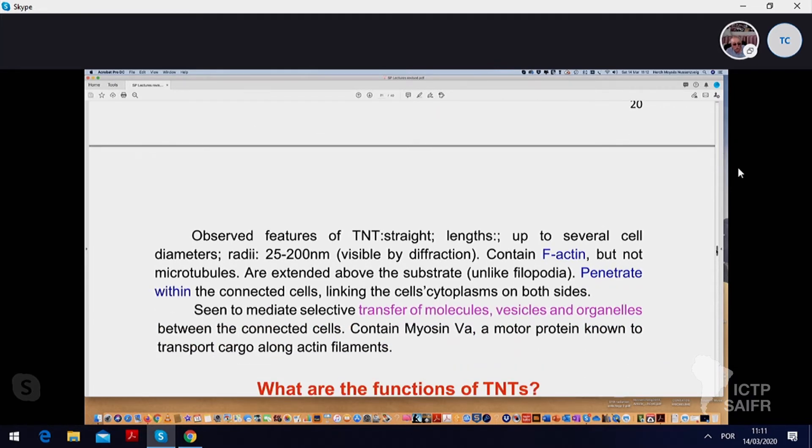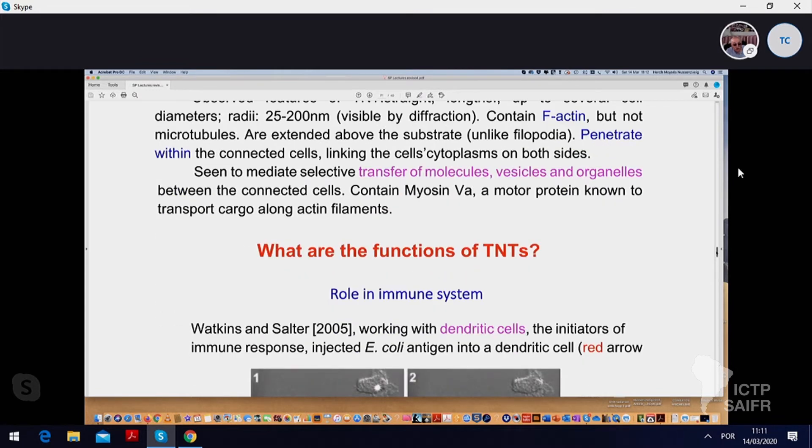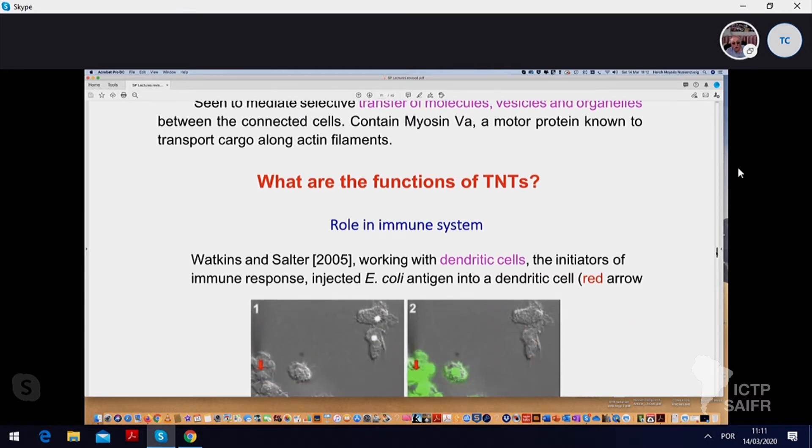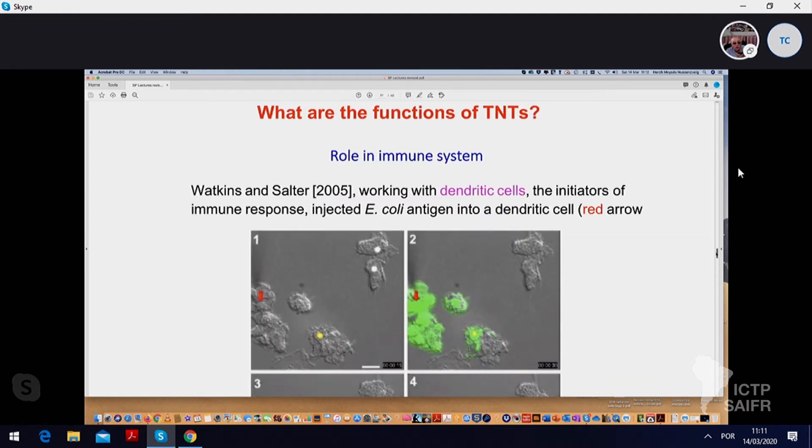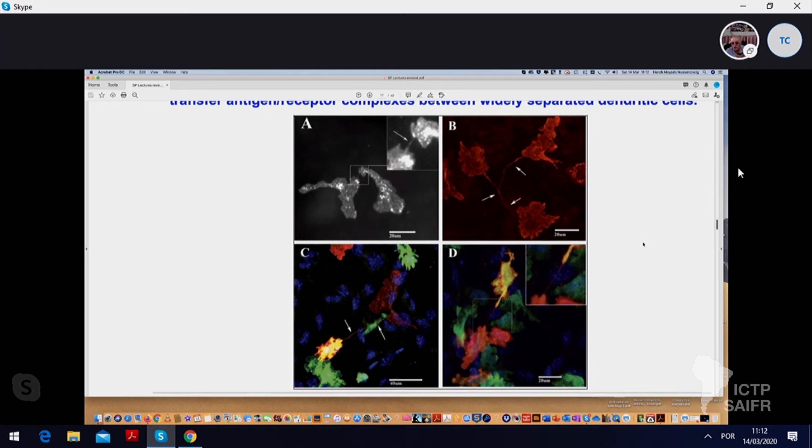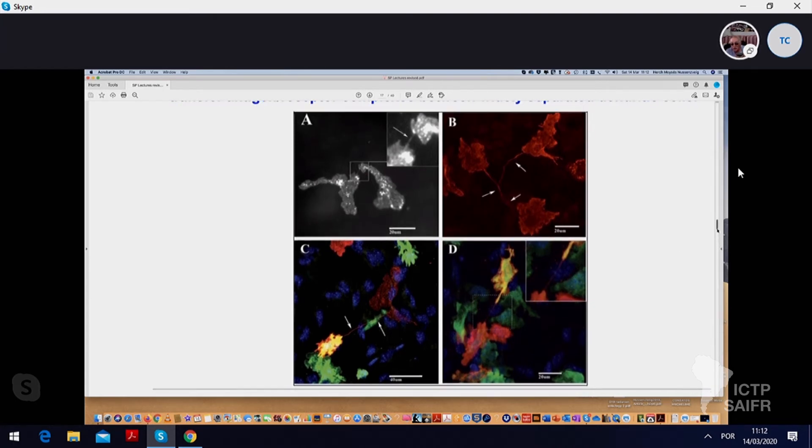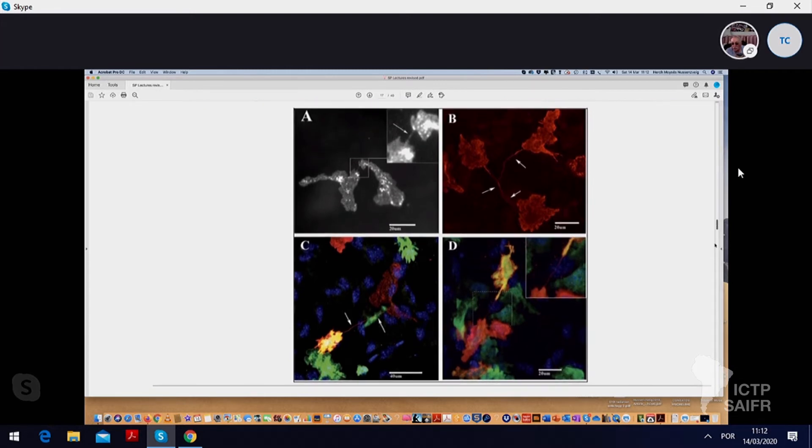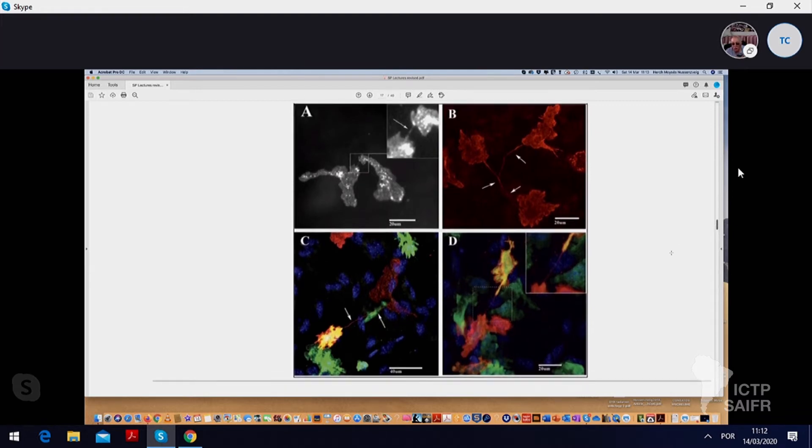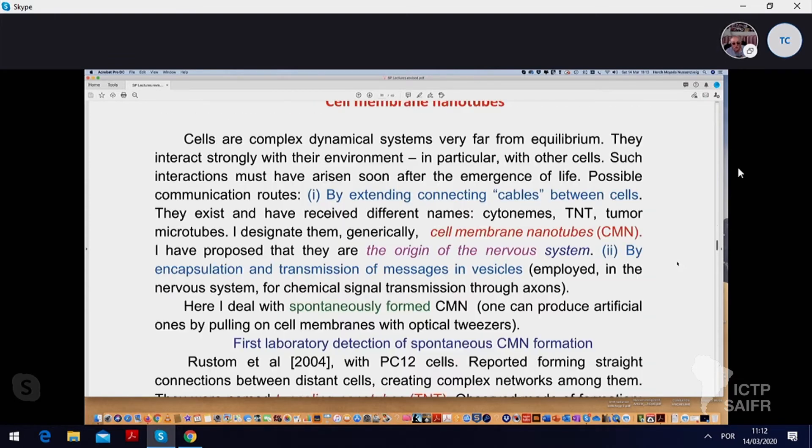What are the functions of TNTs? One very important one is the role they play in the immune system. In a paper by Watkins and Salter, 2005, in which they were working with dendritic cells, which are very important cells of the immune system that initiate the immune response. So they injected E. coli antigen into a dendritic cell. This is the red arrow.